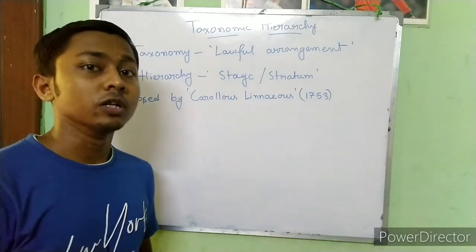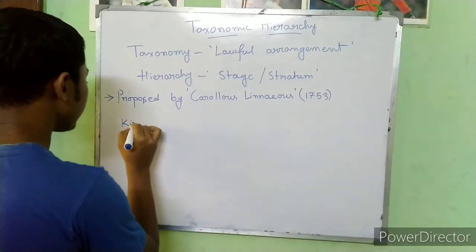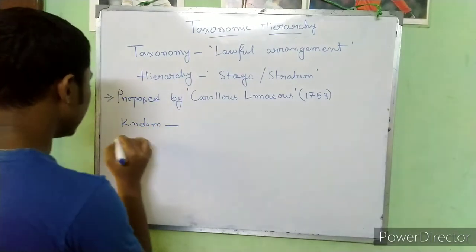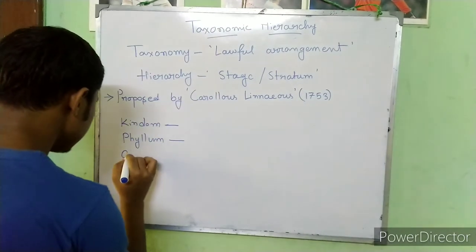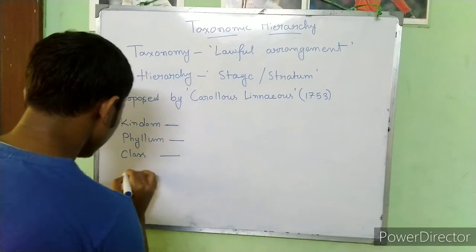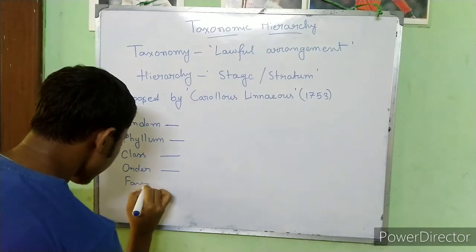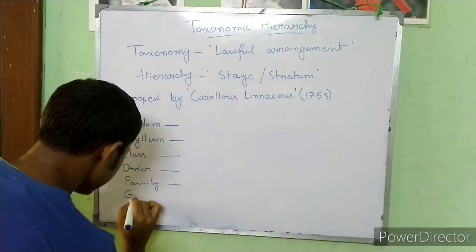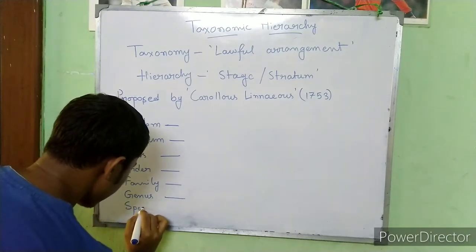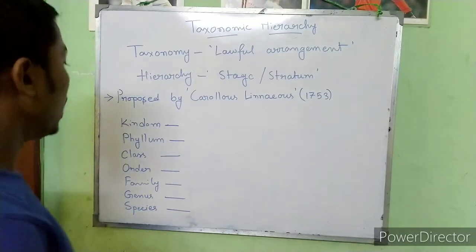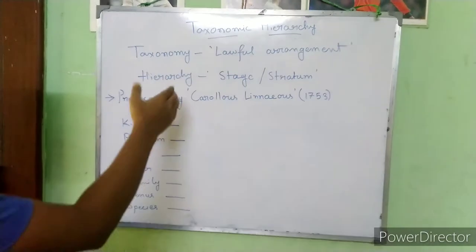When we arrange an organism, the first category is Kingdom, then Class, then Order, then Family, then Genus, then Species. That is the primary stage. In this way, classification is organized and the hierarchical taxonomy arrangement is established.